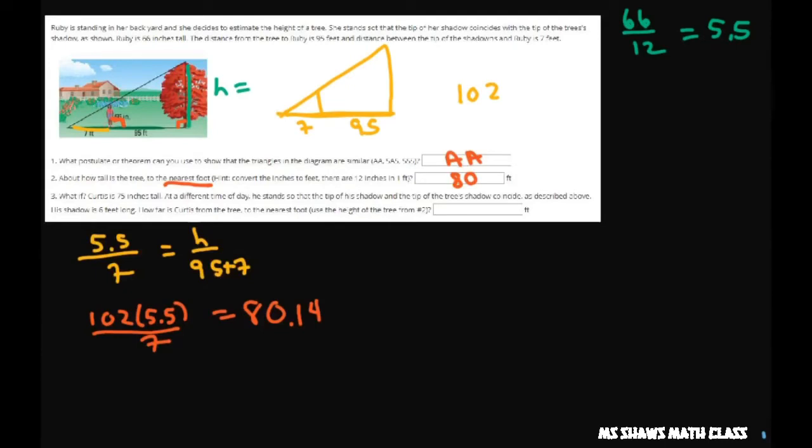Now the third question says, what if Curtis is 75 inches tall? So let's divide that up real quick and convert it to feet. So 75 divided by 12 is 6.25. He stands so the tip of his shadow and the tip of the tree shadow coincide as described, so it's basically the same thing.